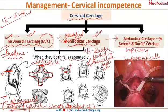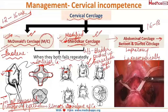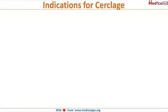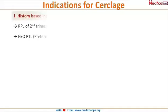McDonald's cerclage and modified Shirodkar's cerclage are done between 12 to 16 weeks of gestation, while abdominal cerclage is done between 16 to 18 weeks when the uterus comes out of the pelvis and becomes an intra-abdominal organ, making it easier to access. Regarding indications for cerclage, the first and most important is a history-based indication: if the patient gives a history of two or more second trimester abortions, cerclage is indicated in the current pregnancy.